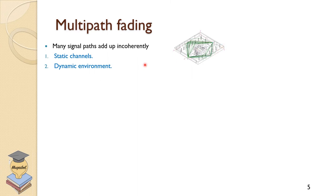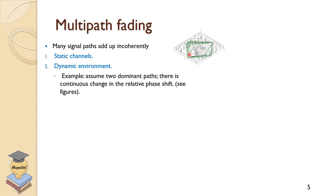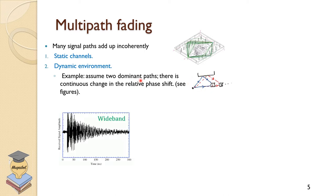Alternatively, we could have a dynamic environment where things change — transmitter, receiver, or even the channel in between — and in that case, the response of the channel would be time-varying. For example, with a transmitter here and a receiver traveling, there is a line-of-sight path and a reflection. As the receiver travels, the relative distance between the two paths shifts and changes with time, so at some times they add constructively, at others destructively. This is like the two-ray model. So one classification is static channels versus dynamic channels.